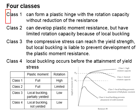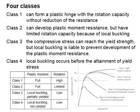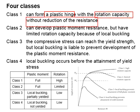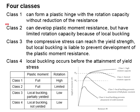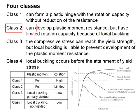There are four classifications. In general, class one is the best and class four is the worst. Class one sections can form a plastic hinge with rotational capacity without reduction of resistance. Class two sections can develop plastic moment resistance but have limited rotational capacity because of local buckling.